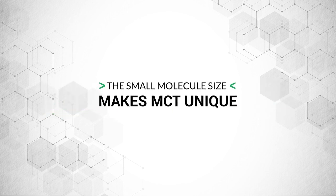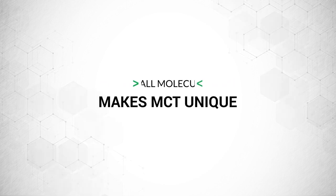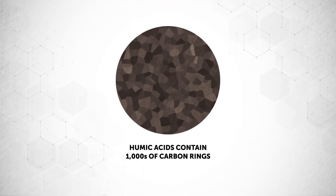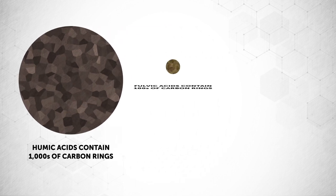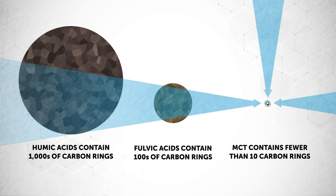So what makes MCT so unique? Well, it is the molecule size that makes the difference. Humic acids are very complex and contain thousands of carbon rings. Fulvic acids contain hundreds of carbon rings. MCT contains fewer than 10 carbon rings.